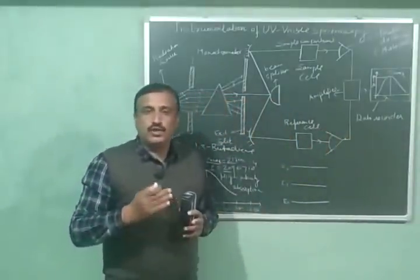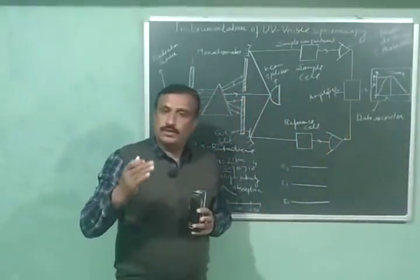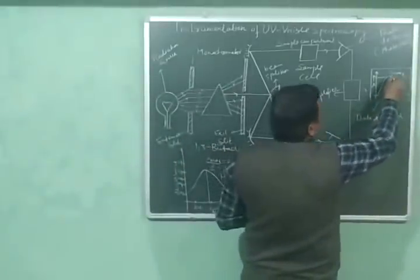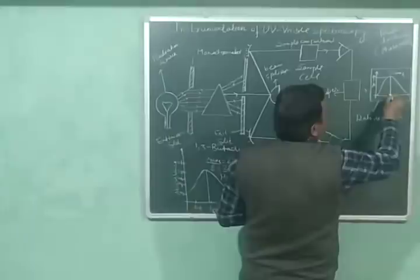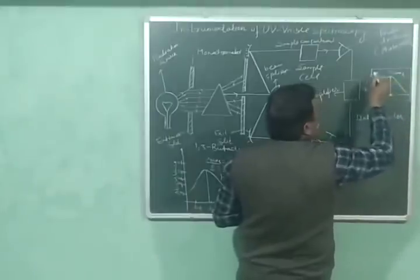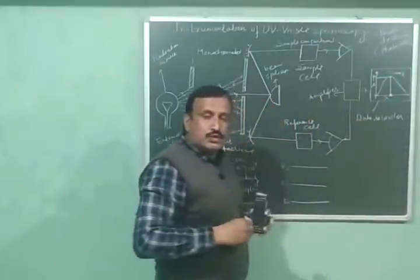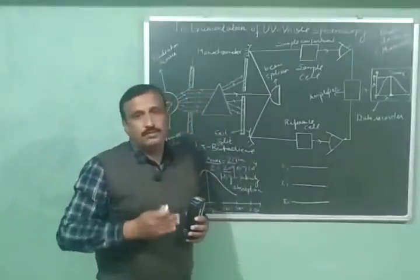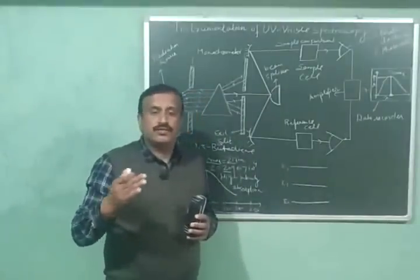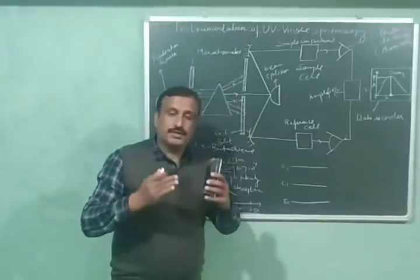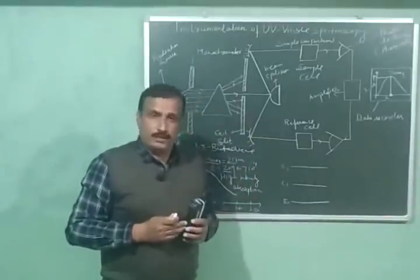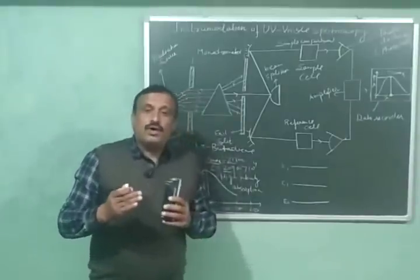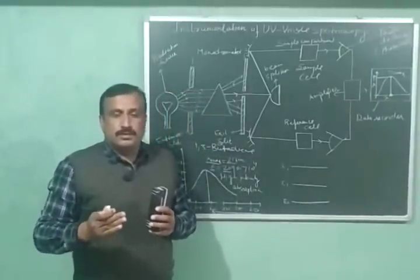The resulting graph is called the UV-visible spectrum of the compound or sample. The wavelength which has maximum absorbance is called the lambda maximum (λmax) of the compound. This is a characteristic of the compound, and the compound is identified with the help of its lambda maximum.